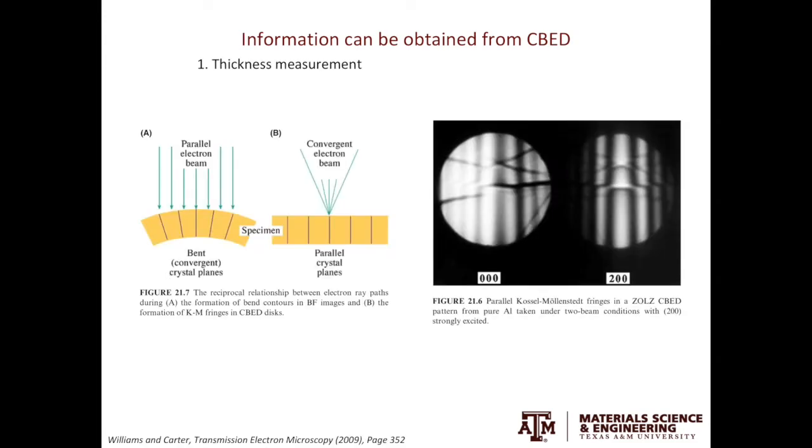Before jumping to the details of thickness measurement, let's compare two scenarios. The first is parallel beam diffraction, but with a bent crystal. The local lattice plane directions are different from one place to another. This will lead to bright and dark fringes, called bending contours. You will learn more about bending contours in one of the future videos. Now, let's look at the second scenario. The specimen is flat, so all the lattice planes are parallel to each other, but the electron beam is converged, coming into the specimen at different angles. This will be analogous to the first case, where the electron beam is parallel but the specimen is bent.